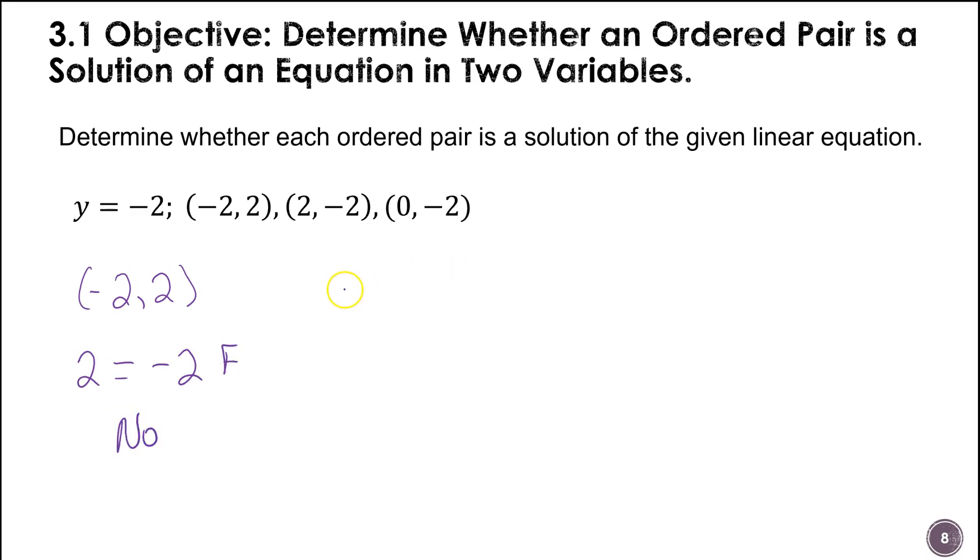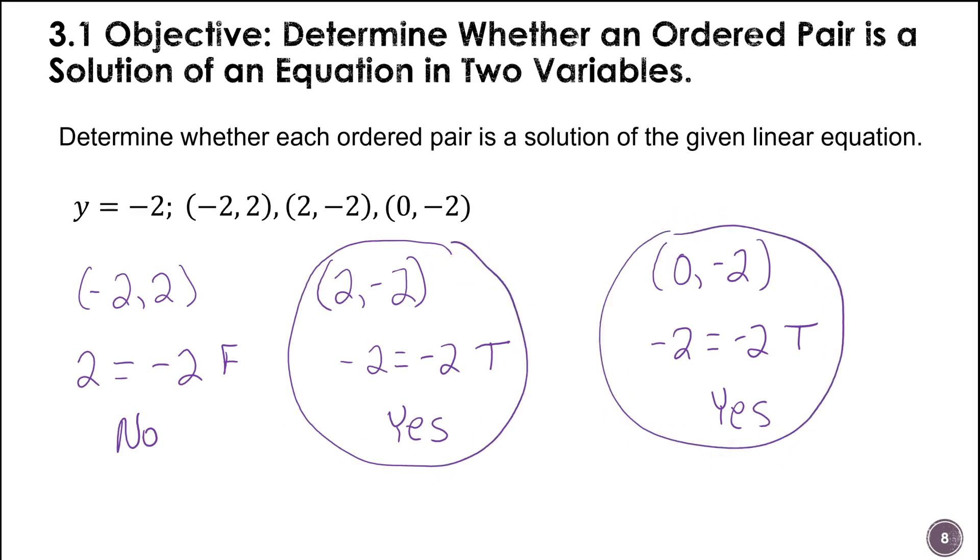So on the next one, 2, negative 2, I'm going to put negative 2 in for y. So you see that one is true, so we're going to say yes. And on the last one, I know this one may seem a little weird to you, but this is how you're going to check it. We're going to just put what we can in the equation, which we can put negative 2 in for y. That's a true statement again. So this is a yes.